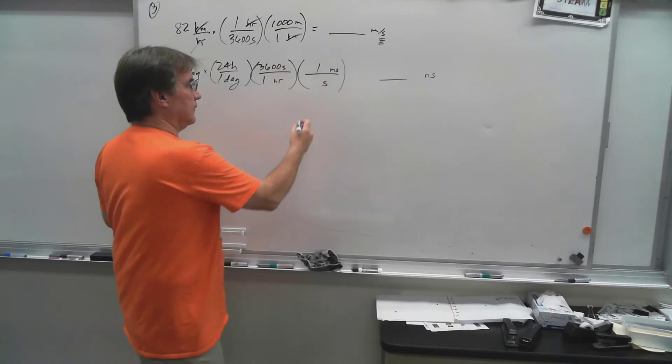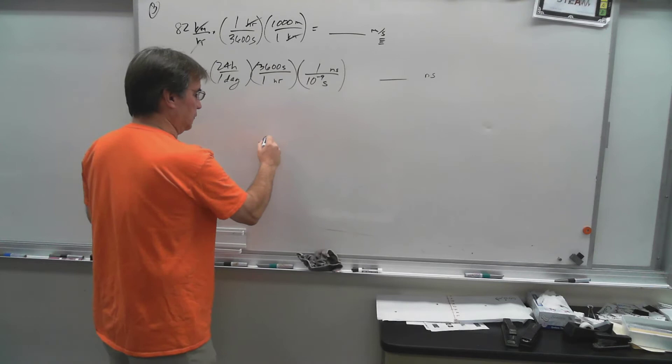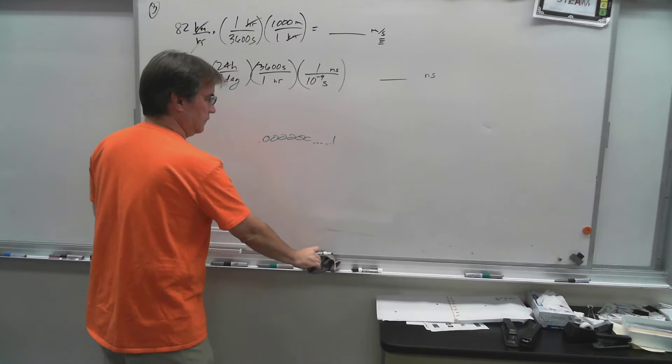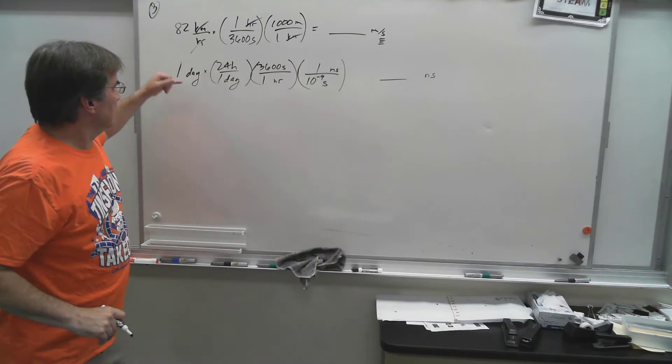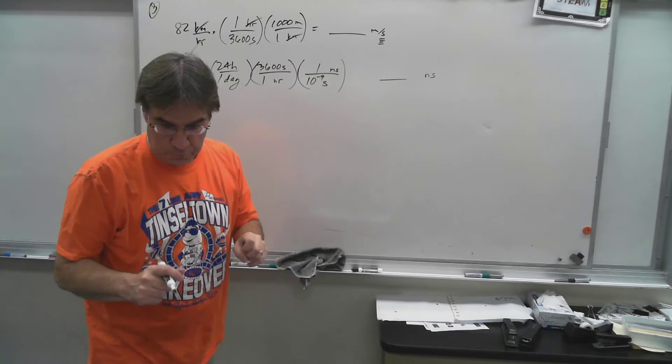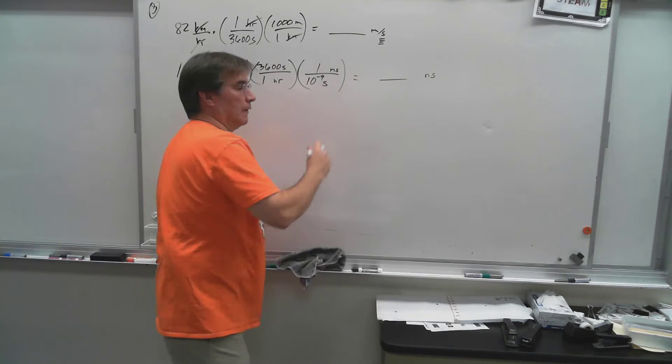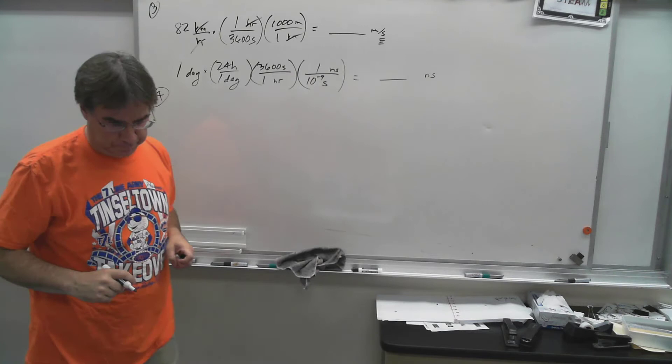And then if I want to go from seconds to nanoseconds, actually I'll do it this way. One nanosecond is 10 to the negative ninth seconds. Meaning in nanoseconds 0.0000, a whole bunch of zeros, and then one. So 1 times 24 times 3,600 divided by 10 to the negative ninth. You should expect a really big number out of this because one day is going to be a lot of nanoseconds. Alright, that was number three.